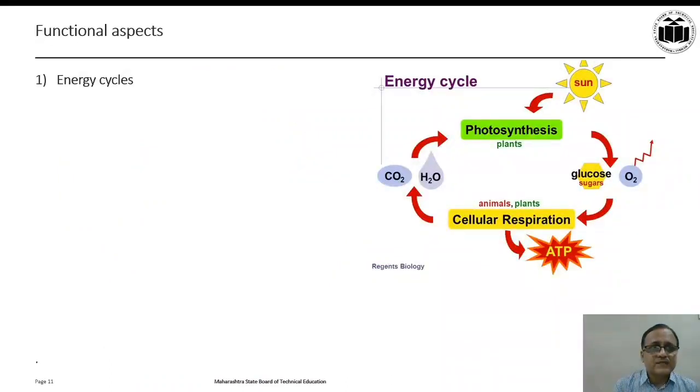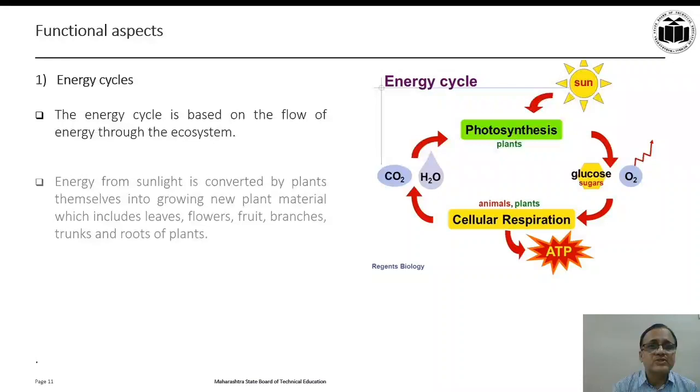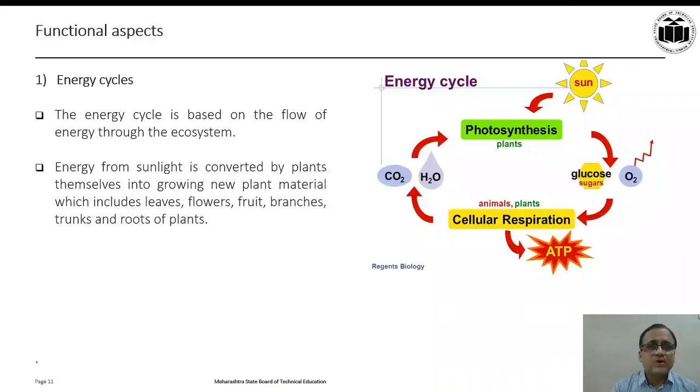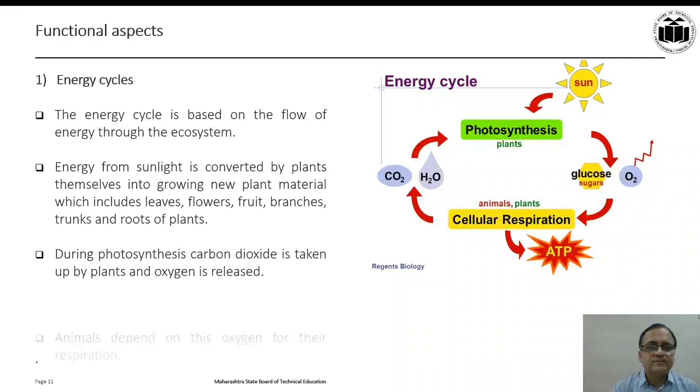First functional aspect is energy cycles. The energy cycle is based on the flow of energy through the ecosystem. Energy from sunlight is converted by plants themselves into growing new plant material which includes leaves, flowers, fruits, branches, trunks, and roots of plants. During photosynthesis, carbon dioxide is taken up by plants and oxygen is released. Animals depend on this oxygen for their respiration.